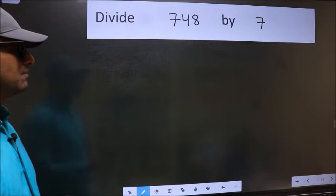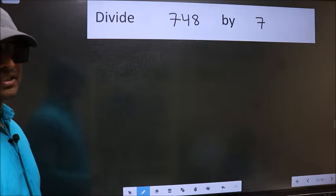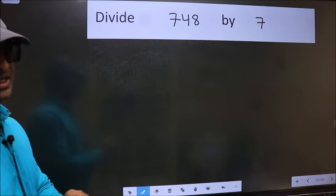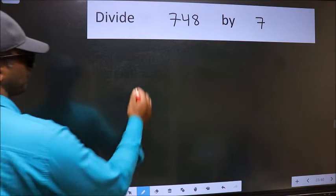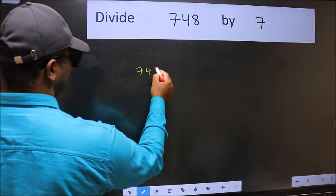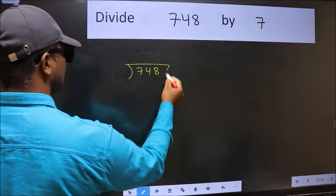Divide 748 by 7. To do this division we should frame it in this way. 748 here and 7 here.